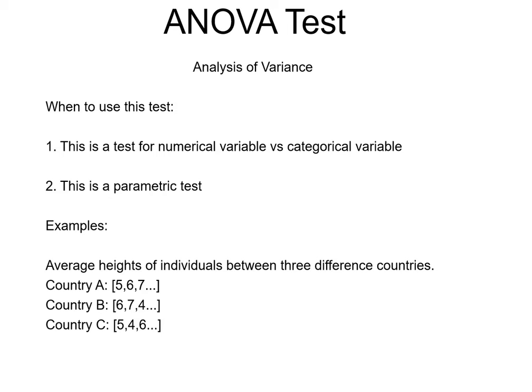When are we going to use this test? The first is that this is a test for numerical variable versus a categorical variable. Now what can be an example of this? Example can be there are three countries: country A, country B, country C. Each of these countries is a category and within them are the elements of the heights of the individuals: 5 feet, 6 feet, 7 feet like that.